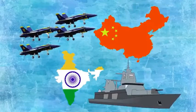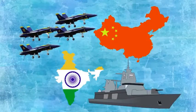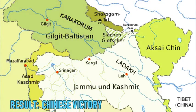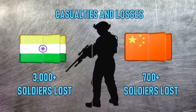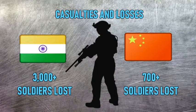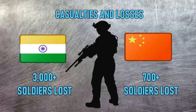The Indo-China War was also noted for the non-deployment of the navy or air force by either the Chinese or Indian side. Result: Chinese victory. Territorial changes: China captured Aksai Chin. Casualties: India lost 3,000-plus soldiers killed; China lost 700-plus soldiers killed.